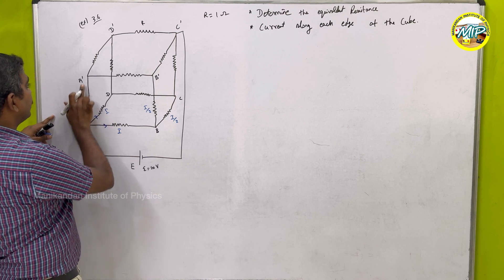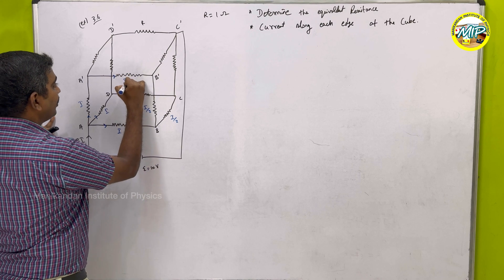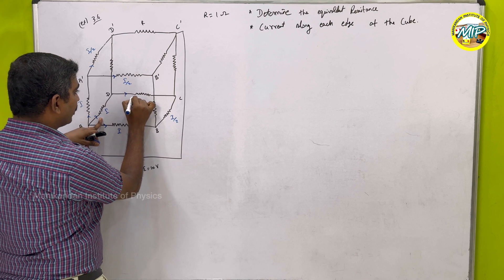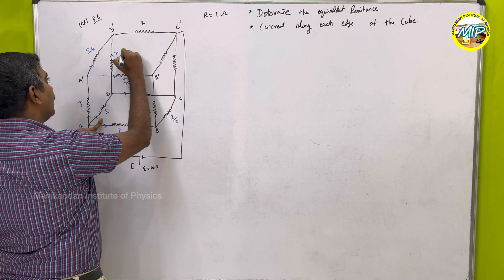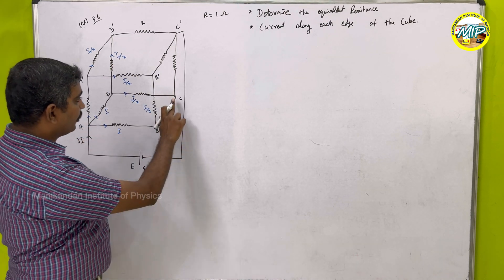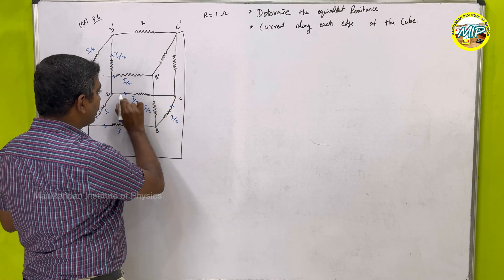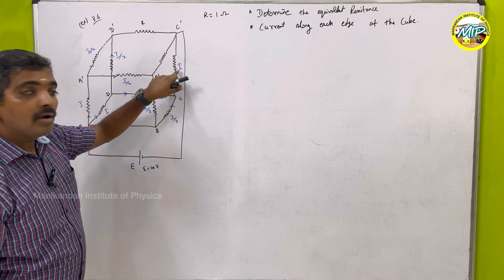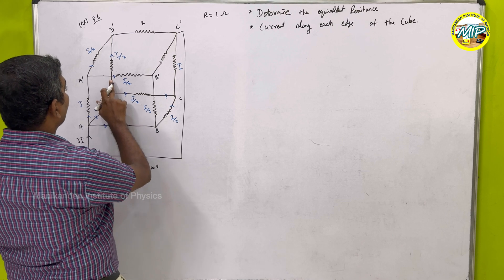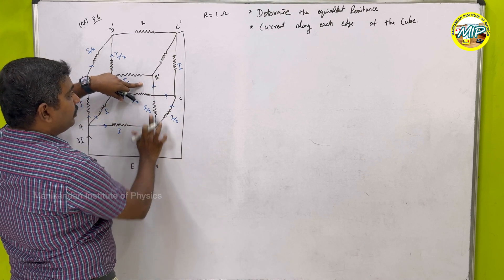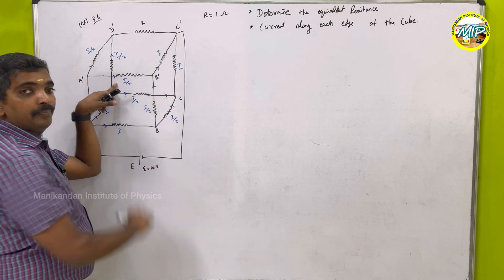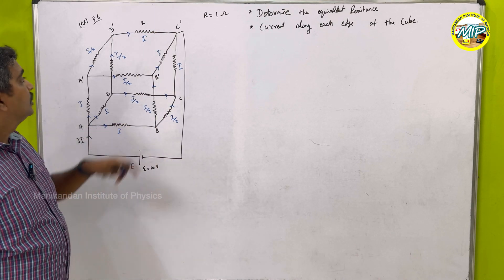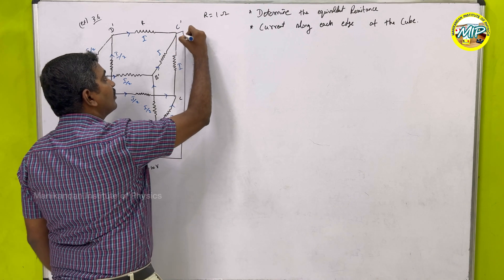The current entering one branch is I/2 and leaving the other is I/2. For the intermediate nodes, the current across each resistor is I/2. At point B, two currents of I/2 combine to give I entering, which then splits again into I/2 going through B to B prime, and I/2 along the other branch. This pattern repeats for all corners due to symmetry — the same current enters and leaves at every corner.